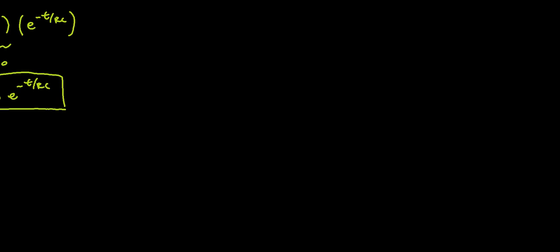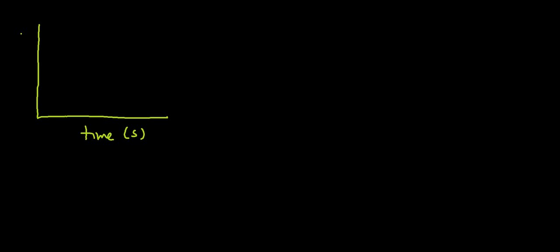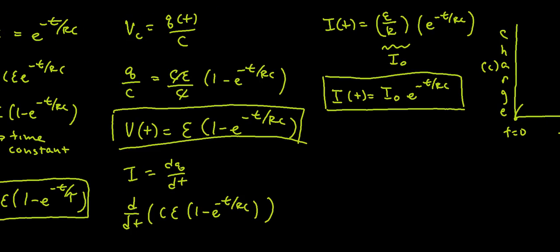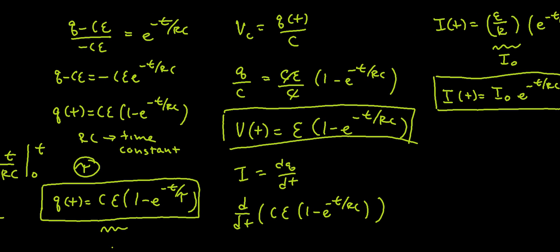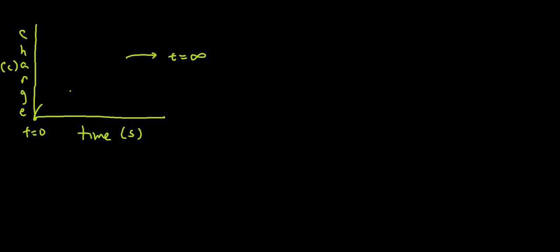The AP usually asks you to draw a graph. I'm going to graph charge versus time — time in seconds versus charge in coulombs. At t equals 0, there's no charge on the capacitor. As t approaches infinity, the charge comes up and levels off at an asymptote. Looking back at our equation, as t approaches infinity, we approach the value C·epsilon. So the graph shows exponential growth with a horizontal asymptote at C·epsilon.